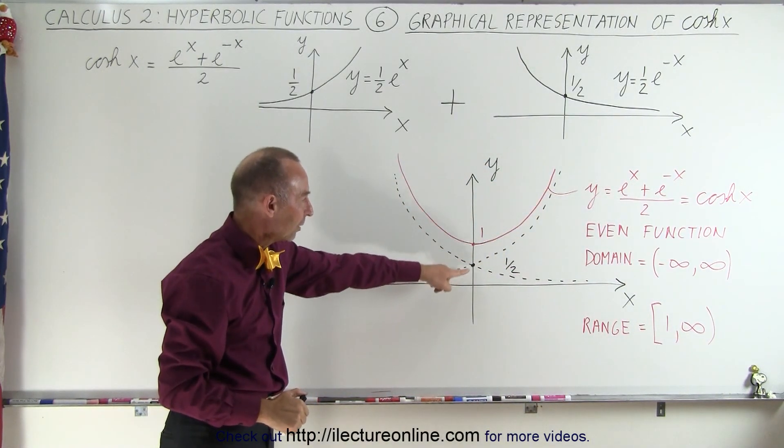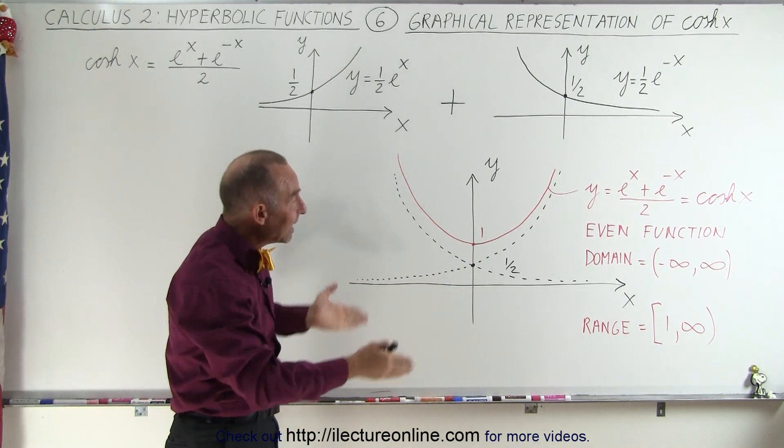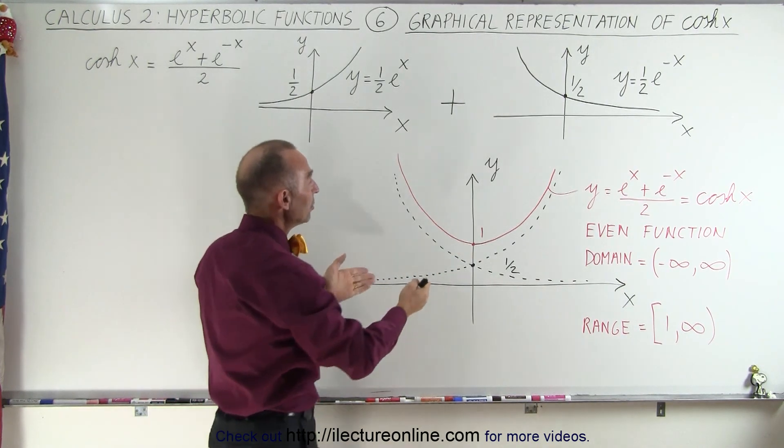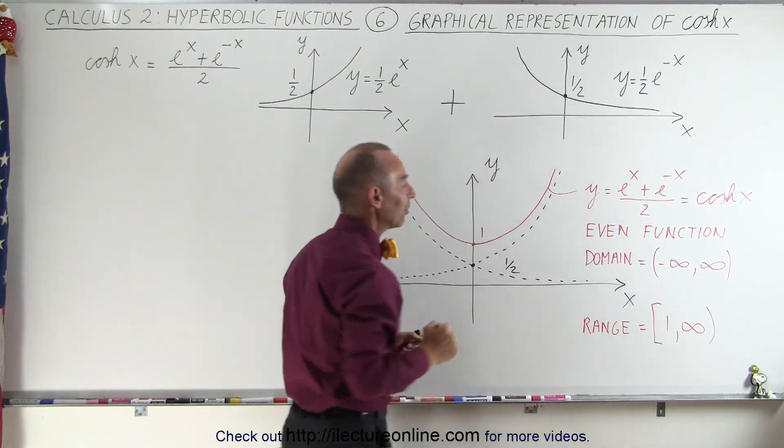Notice that when we add these together, we cross over at y equals 1. Notice it's an even function. The domain goes out to infinity, and the range starts at 1 and goes out to infinity in that direction.